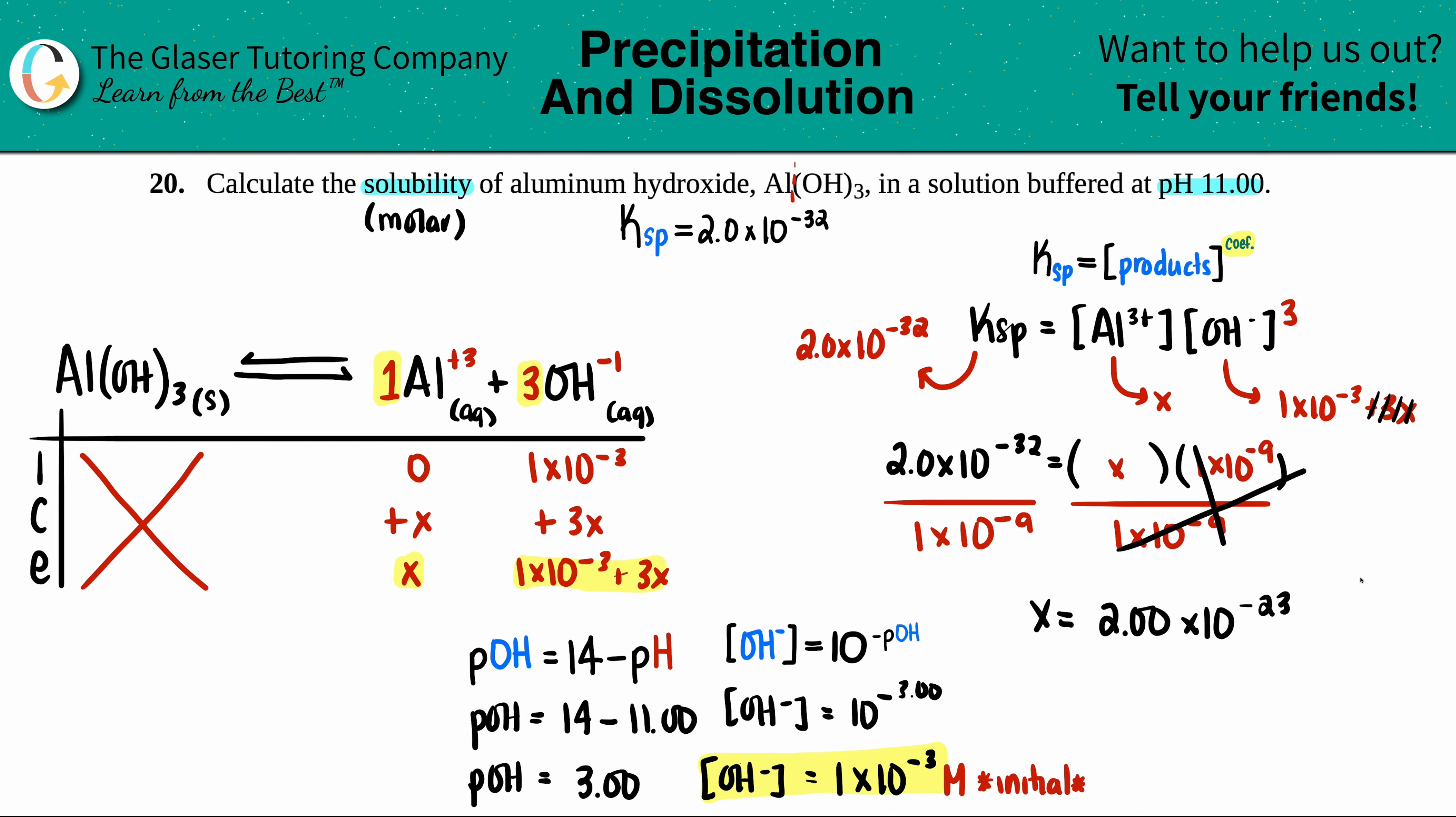Now we just have to make sure that this is acceptable for the 5% rule. So what the 5% rule is, is just to make sure that your approximation is good. What you're going to do is take your answer and divide it by the initial concentration, which is 1×10⁻³, and times by 100. If your answer is 5 or less, we were able to assume that that change was not great and we could just take x as our answer. We're not even at 1%, so we're going to leave that x answer and label it as molarity because that's what we just found.